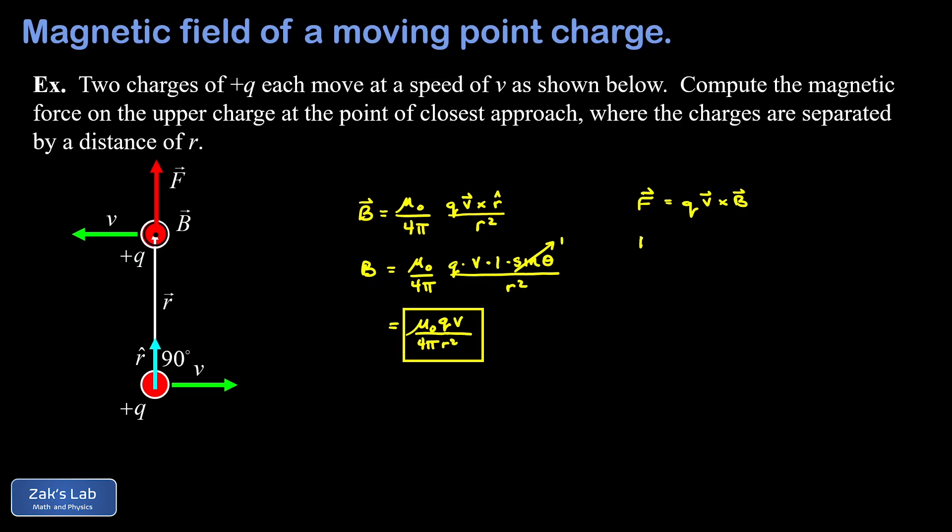To get the magnitude of this force, I have q times the magnitude of the cross product, which is the magnitude of the two participant vectors - V times B times the sine of the angle between them. V is in the plane of the page and B points straight out, making them at right angles, and sine of 90 is one. So all we have to do is take our magnetic field magnitude and multiply it by an additional factor of q and V. As it turns out, my magnetic force is mu naught q squared V squared divided by 4 pi r squared. And that's the end of our example.